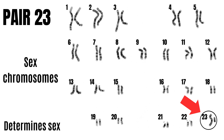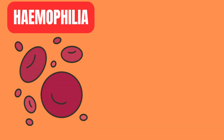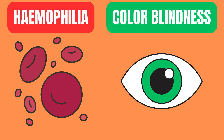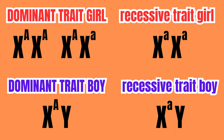X-linked traits are located on the X chromosome and include things like hemophilia and colorblindness. Otherwise they work similarly to autosomal traits, meaning that for a recessive trait to be expressed both alleles have to be recessive. However, as boys only have one X chromosome, they will only have one allele which determines if the trait is expressed or not.